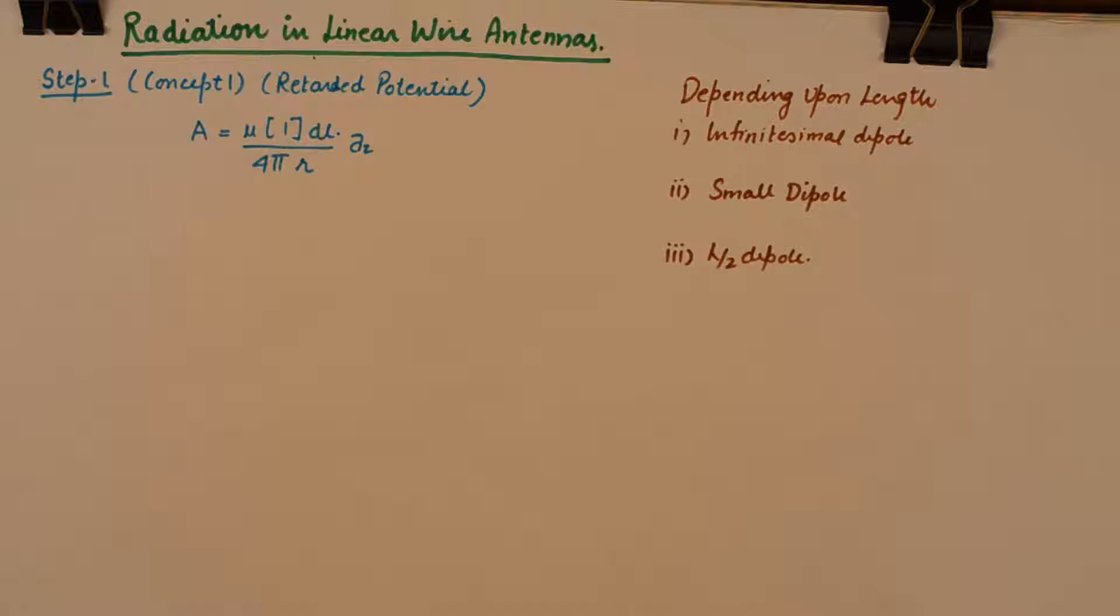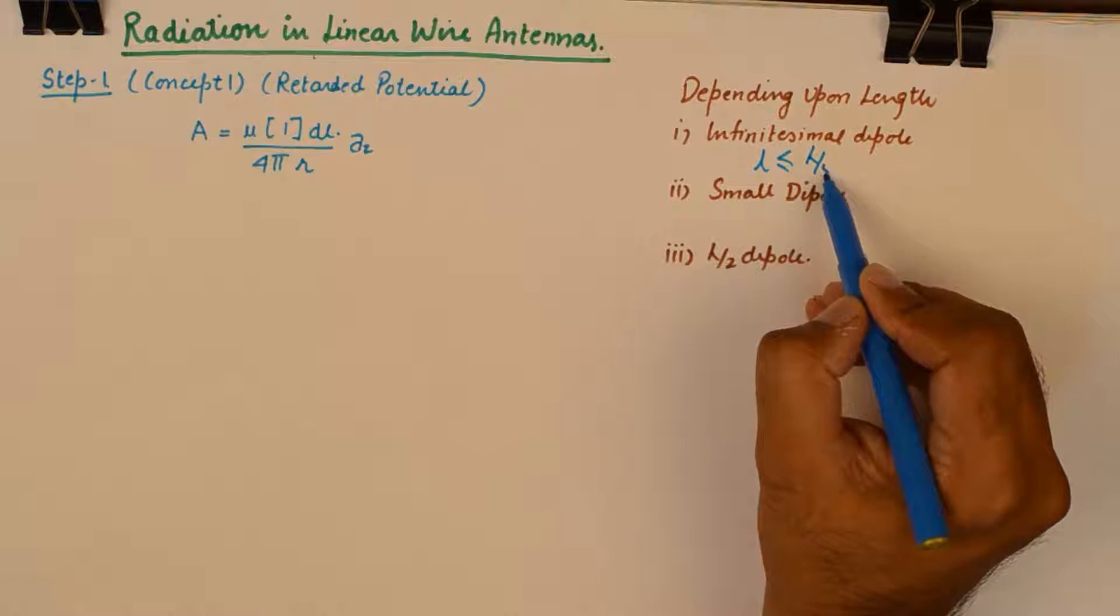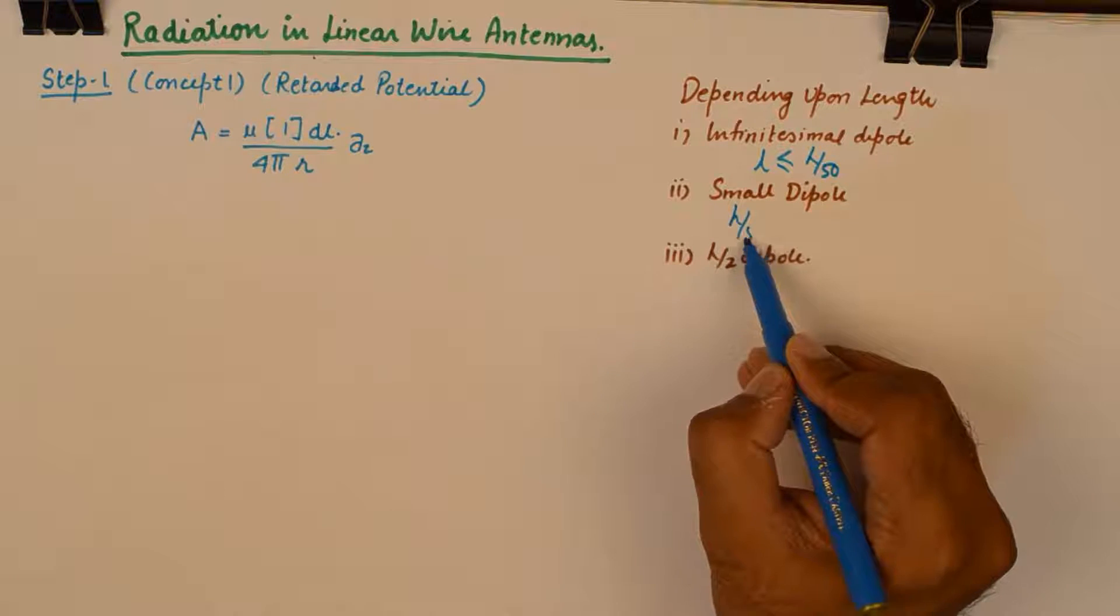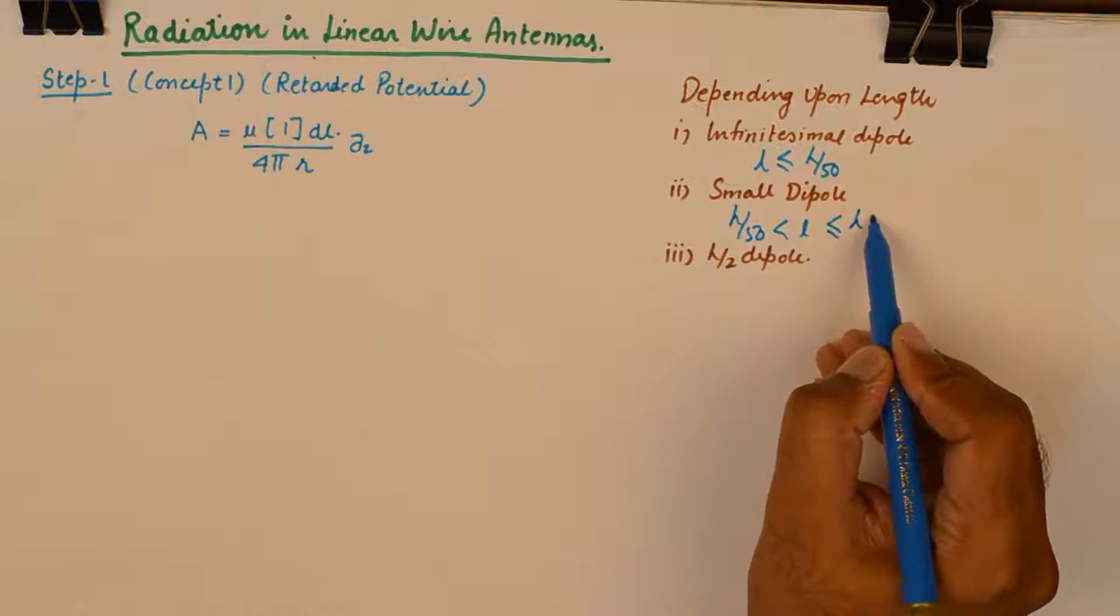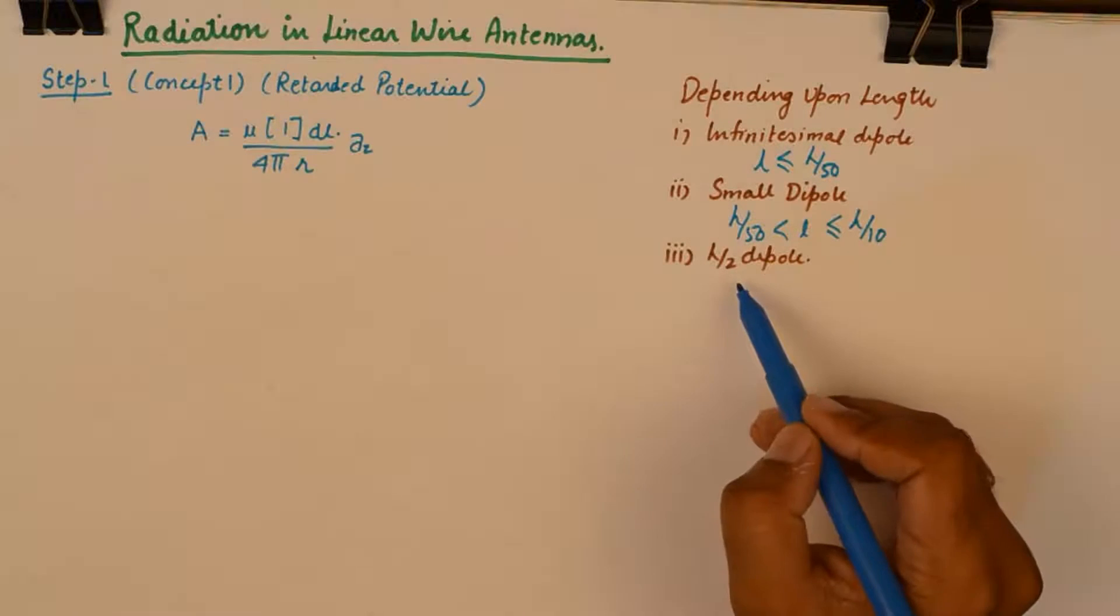The linear wire antennas are classified into three different categories depending upon their length. We have infinitesimal dipole for which the length of the antenna should be less than or equivalent to lambda by 50. We have small dipole for which the length of the antenna should lie between lambda by 50 to lambda by 10. And of course lambda by 2 dipole antenna which is also known as Hertzian antenna has a length equivalent to lambda by 2.